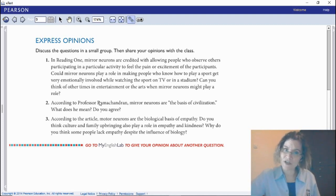Or number two: According to Professor Ramachandran, mirror neurons are the basis of civilization. What does this mean? Do you agree with him? Or number three: According to the article, mirror neurons are the biological basis of empathy. Do you think culture and family upbringing also play a role in empathy and kindness? And why do you think some people lack empathy despite the influence of biology? Pick one, write down very briefly what your opinion is and give a few reasons why you have that opinion. You can pause your video.